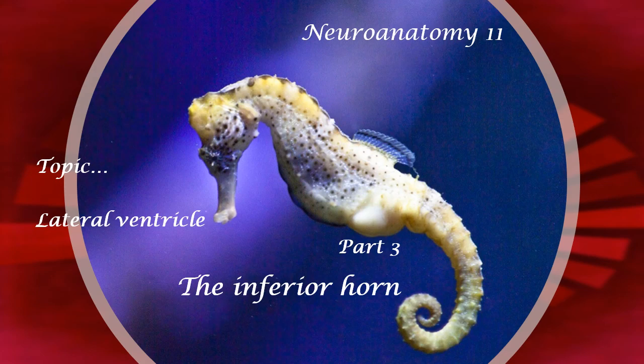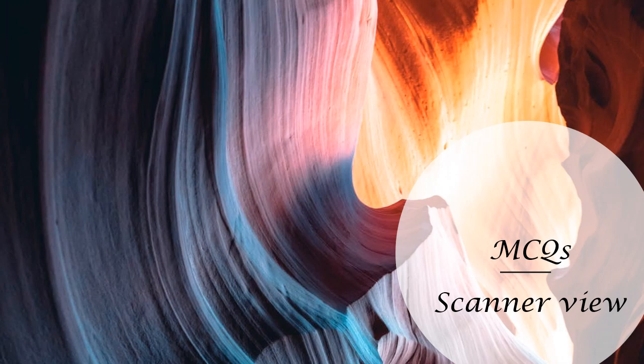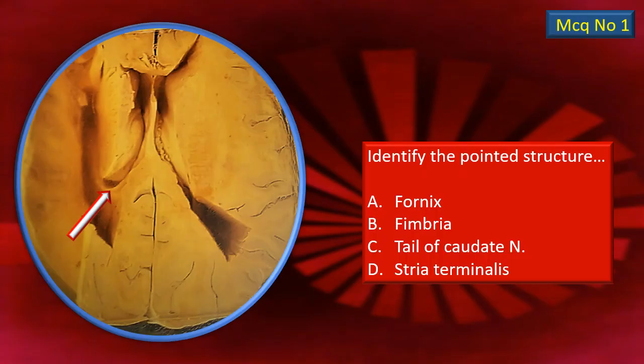The topic specific to this particular video, Neuroanatomy number 11, is the lateral ventricle inferior horn. Let's have a look at the MCQs before we start the actual discussion. This is the first MCQ — a horizontal section roughly at the level of the interventricular foramen, with a little more dissection done into the temporal lobe so that at least a part of the inferior horn is visible. There is an arrow mark pointing to a particular structure. Identify it. There are four options given — choose the best answer.